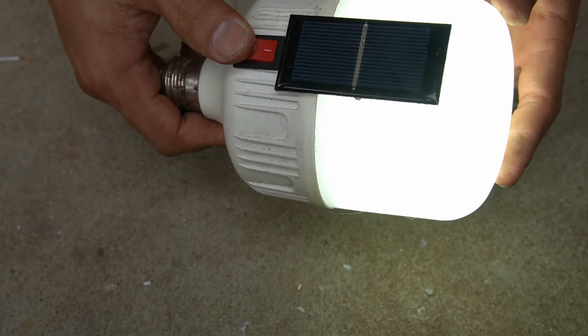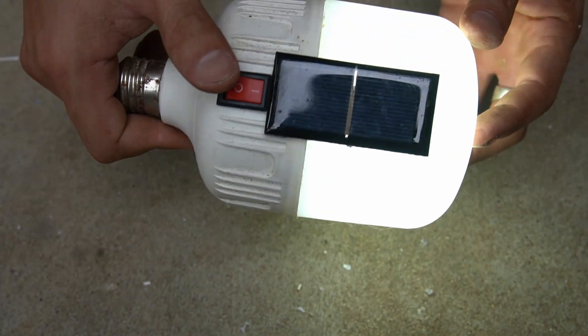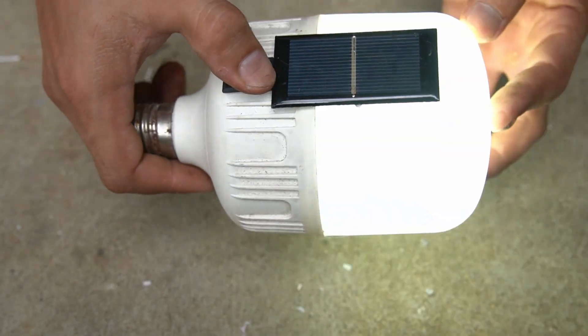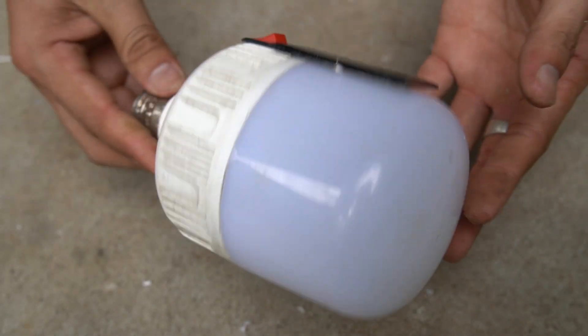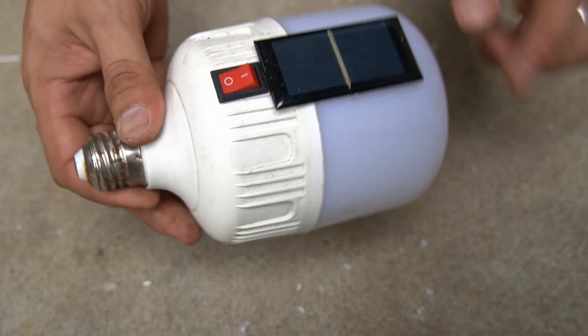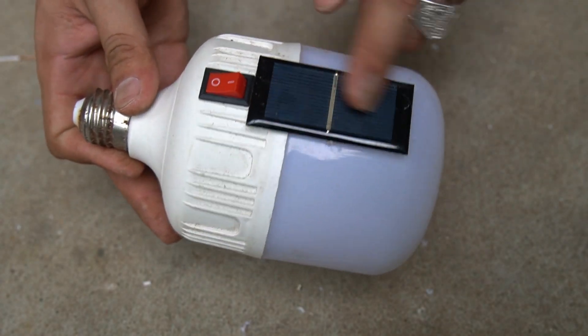Finally I made a solar powered lamp from a broken light bulb. You can see how I did it. Isn't it great? When the battery runs out we can recharge it by placing the bulb under sunlight. If you like this idea, don't forget to give me a like and hit the notification bell to see the latest videos. Thank you very much.